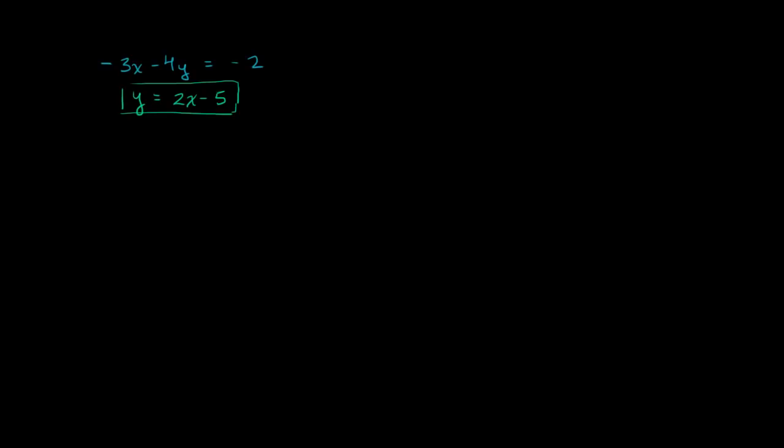We can take this constraint on y in terms of x and substitute it for y in this first equation, then solve for x. So the first equation becomes negative 3x minus 4, but instead of putting y there, the second constraint tells us y equals 2x minus 5, so it's 4 times (2x minus 5), and all of that equals negative 2. Now we have just one equation with one unknown, and we just have to solve for x.